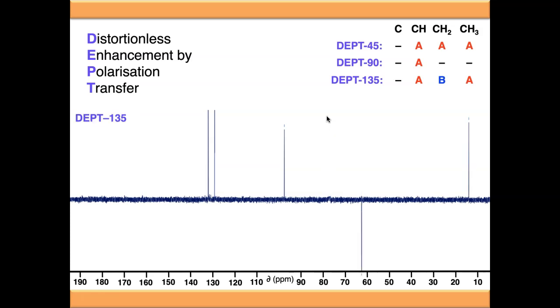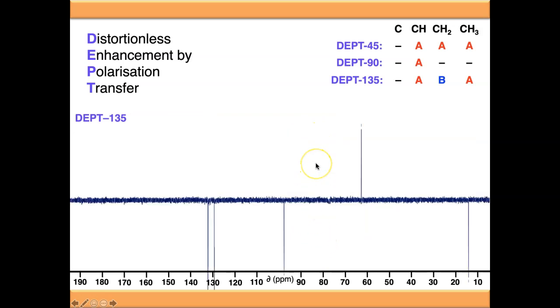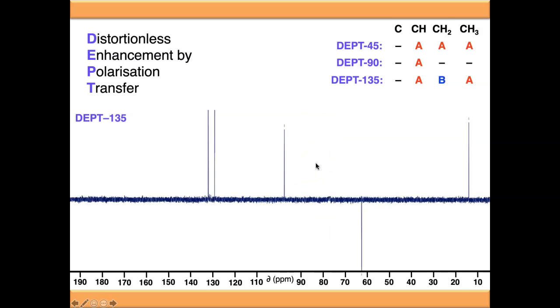If we go to a DEPT135 spectrum, now some of the signals have moved below the baseline. The reason I call this A and B rather than positive or negative is that you're not guaranteed to get CH3 and CH above and CH2 below—it might be the other way around. So it could look like this, and it's up to you to work out which is which.